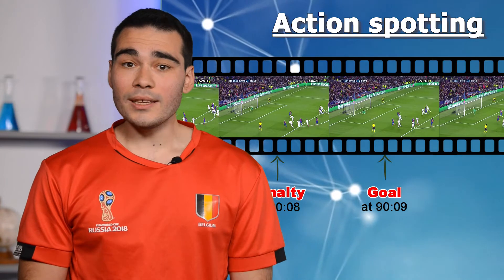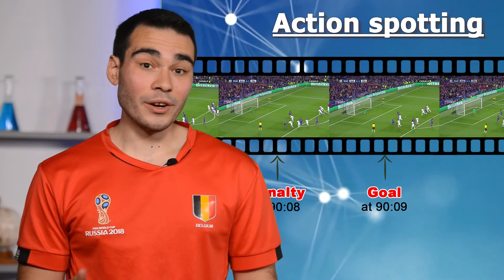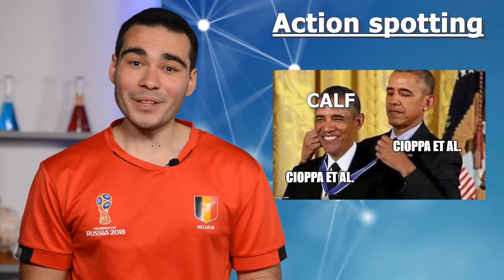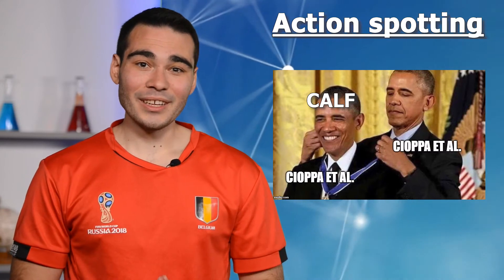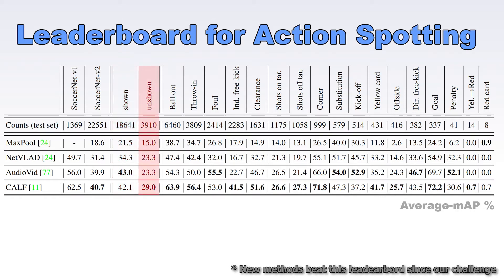We tested several methods and the winner is CALF — but that was a close call. Here is the full table of results, then performances only on visible actions, unshown actions, and per-class results.